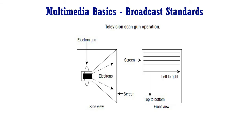To produce an image on a television screen, an electron gun scans across the screen from left to right, moving from top to bottom, as shown in the figure on the screen. Early television sets used a phosphor-coated tube, which meant that by the time the gun finished scanning all the lines the broadcast standard required, the lines at the top were starting to fade.